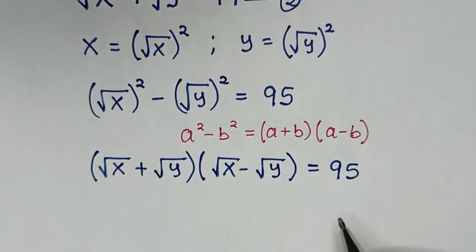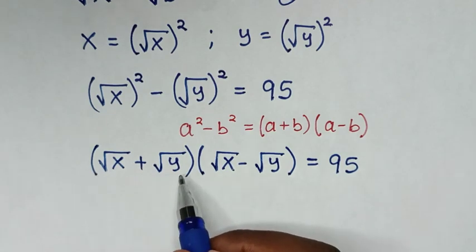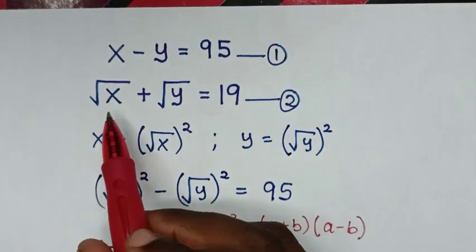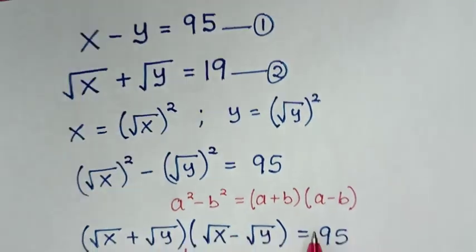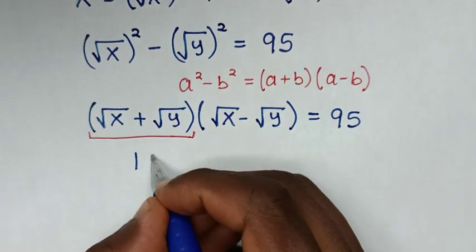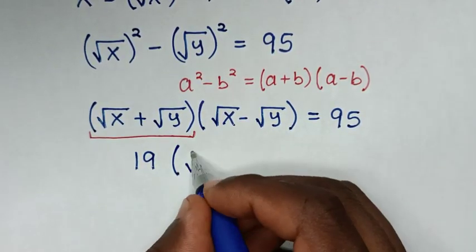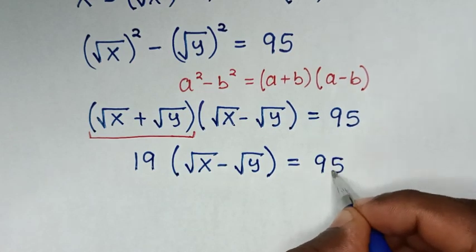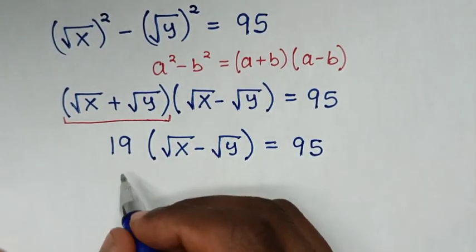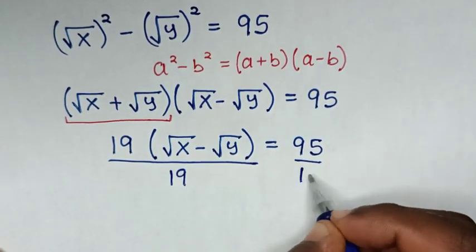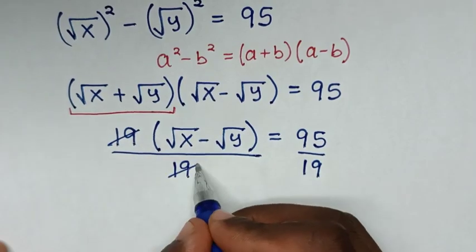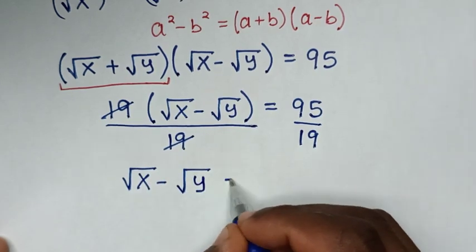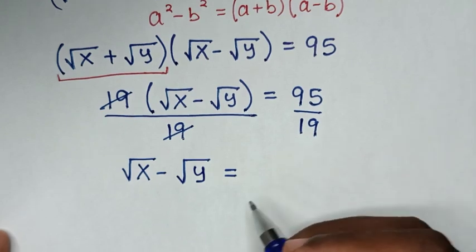From equation 2, square root of x plus square root of y is equal to 19. We substitute 19 here, so it becomes 19 times square root of x minus square root of y equals 95. Then dividing both sides by 19, this gives square root of x minus square root of y is equal to 95 divided by 19, which is 5.